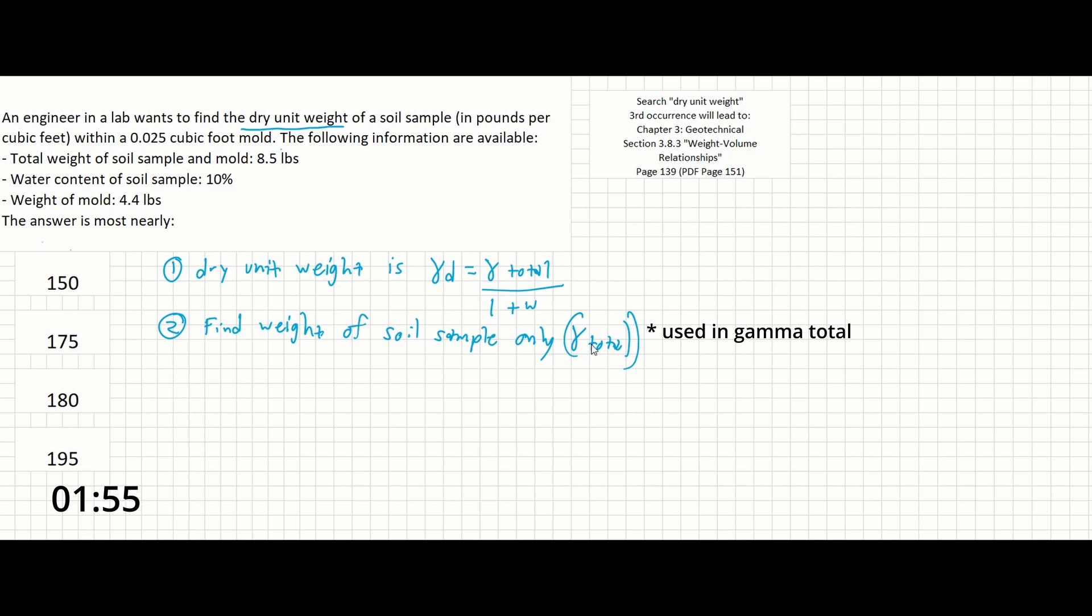We have the weight of the sample and mold and weight of the mold. To get the weight of the soil by itself we simply need to subtract the two. So 8.5 pounds minus 4.4 pounds will give us 4.1 pounds and that is the weight of the soil sample by itself.